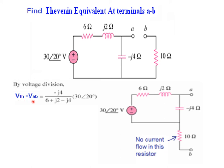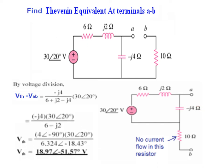By the voltage divider rule we can find the voltage across the capacitor, which will be our V_AB or V_thevenin. So V_thevenin equals the total voltage 30∠20° divided by the total impedance (6 + j2 + (−j4)), multiplied by the impedance across which we are measuring the voltage, which is −j4. Solving, the answer is 18.97∠−51.57°. For any division to take place the terms must be in polar form.